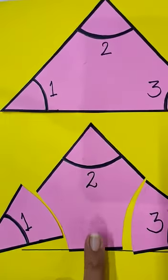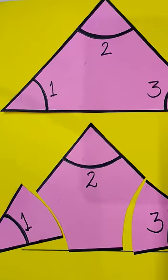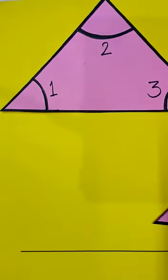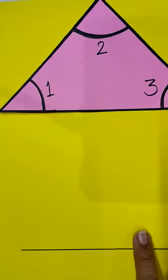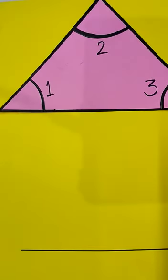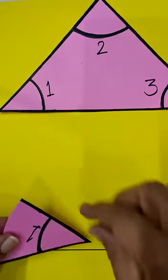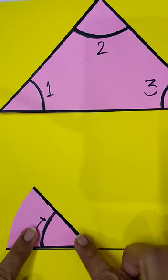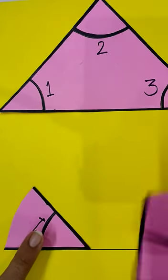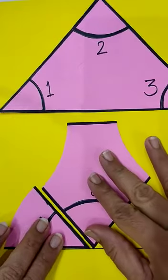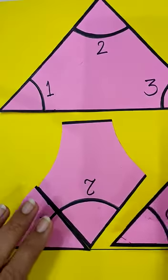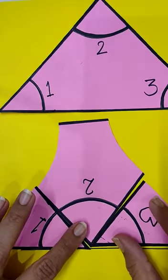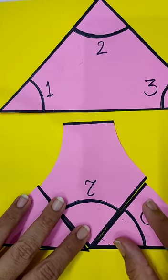Now let me draw a straight line here. We all know that a straight line represents an angle of 180 degrees. Let me arrange these three parts in such a way that we can see angle 1, angle 2, and angle 3.